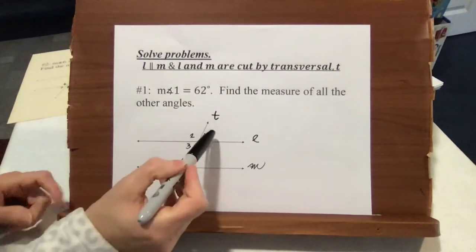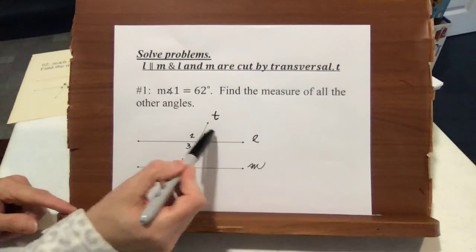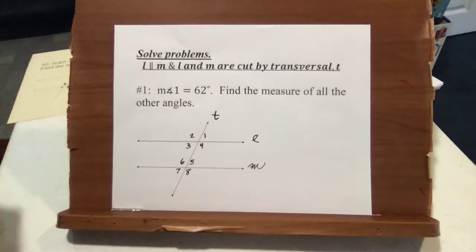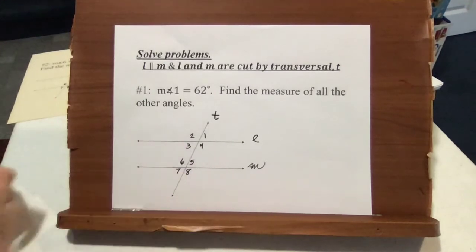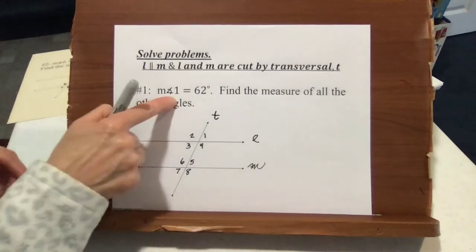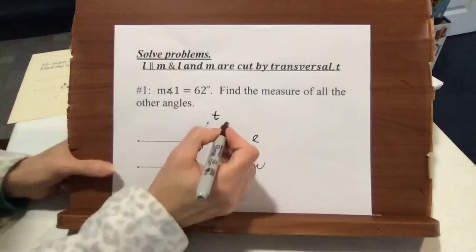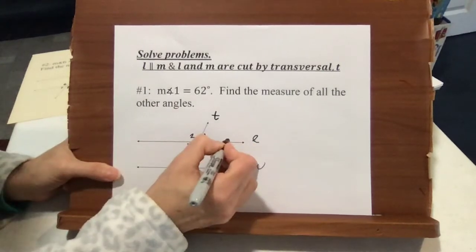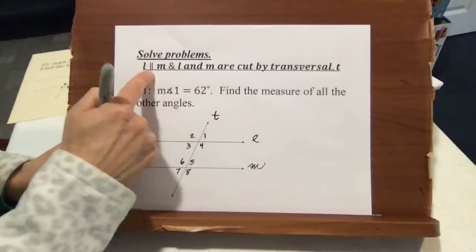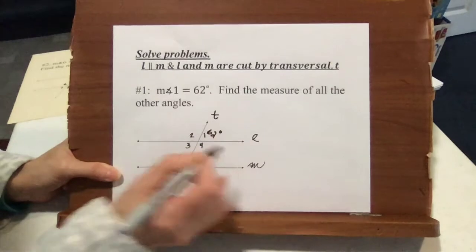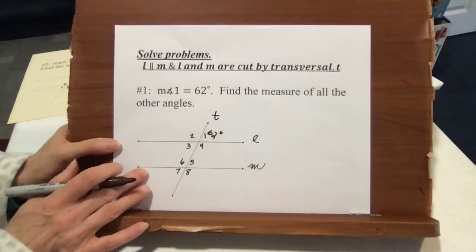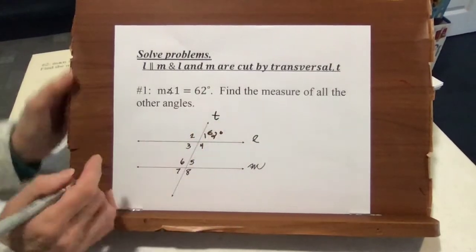Our angles are in order here: 1, 2, 3, 4, 5, 6, 7, 8. The names of them are insignificant other than their placement, but I named them so they're easier to work with. So if we know that the measure of angle 1 is 62 degrees, we're going to write 62 degrees right where angle 1 is — put it right on your figure.